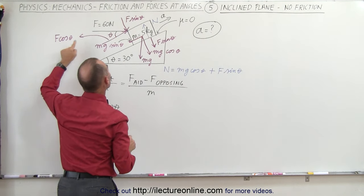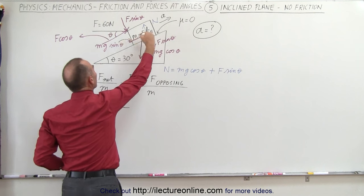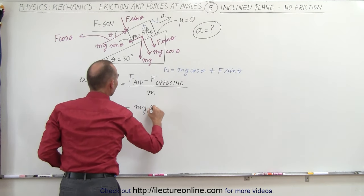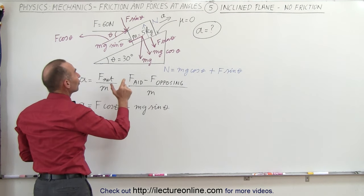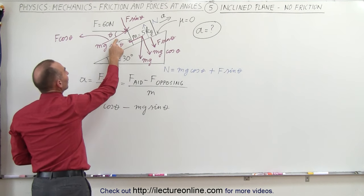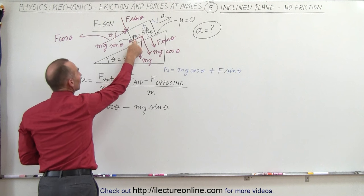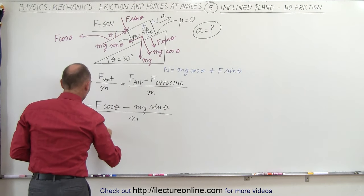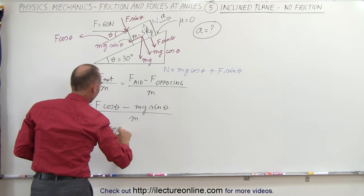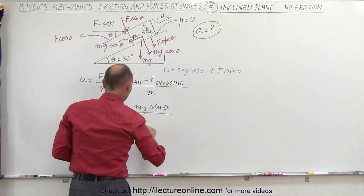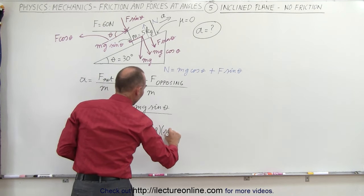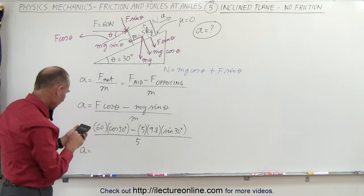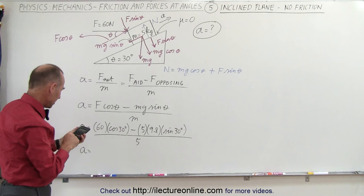Is there anything else? We have this force here which is the opposing force — that's the component parallel to the incline caused by gravity — which is mg times the sine of theta. Those are the only two forces affecting acceleration: F cosine theta aiding the acceleration, mg sine theta opposing the acceleration. So we take this force minus this force and divide by the mass.